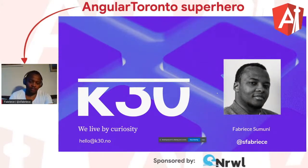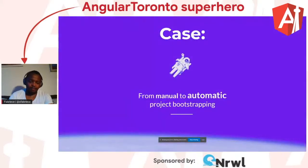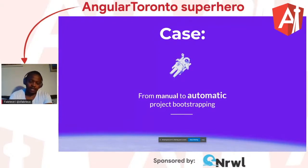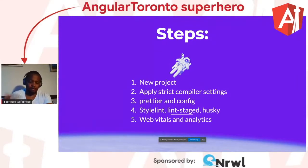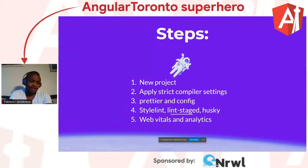While working, I came to a situation where I was doing a lot of manual steps each time I was starting a new project. These steps involved creating a new project, applying strict compiler settings, adding Prettier config, style and lint-stage, Husky, and lately web vitals, analytics, and more. I just kept doing this stuff all the time, things change, there are inconsistencies. So I wondered: how can I make this process repeatable and basically automate it?